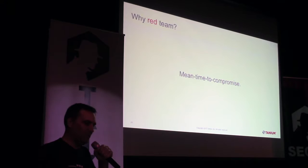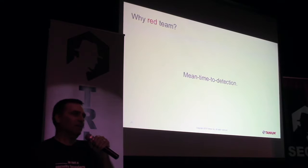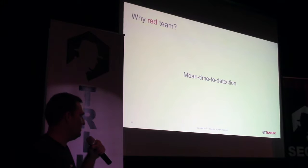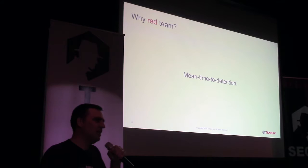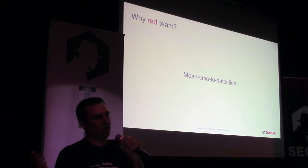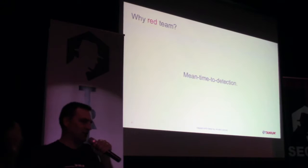You can also figure out mean time to detection. In a lot of organizations — read the Verizon report — they talk about organizations being compromised for months or years before they recognize it. How do you develop a meaningful metric around mean time to detection if the compromise has been going on for months or years? But if you're doing a red team exercise, you know when they started, when they got in, and how long it took to detect — you can build out meaningful data for this. You can also accurately figure out mean time to recovery.